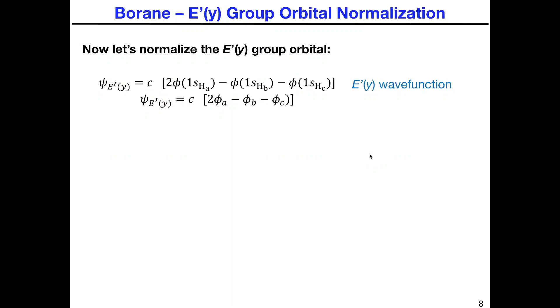Now we'll continue by normalizing the E'(y) group orbital. If you recall, when we performed the projection operator method, that generated the function that you see here. Using the same terminology from the previous slide, we're going to call all of the atomic orbitals phi A, phi B, and phi C.